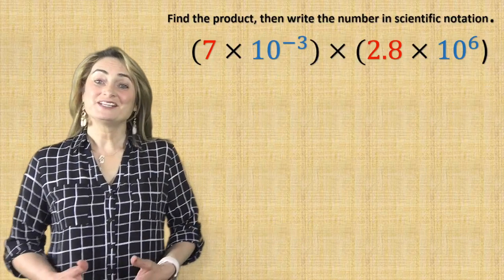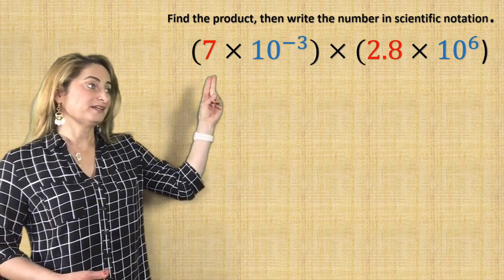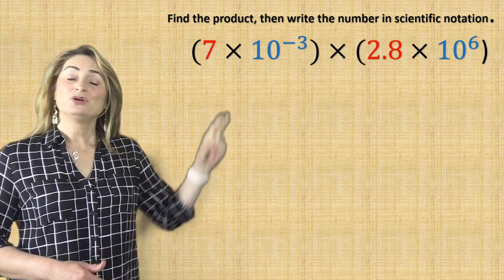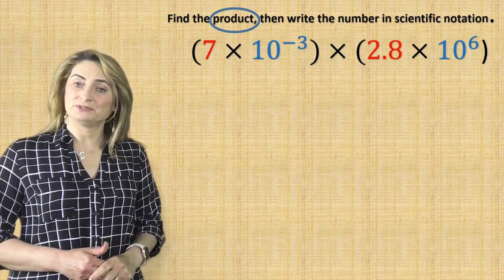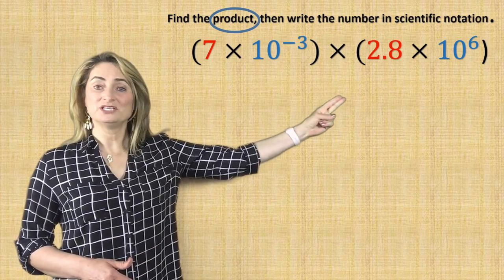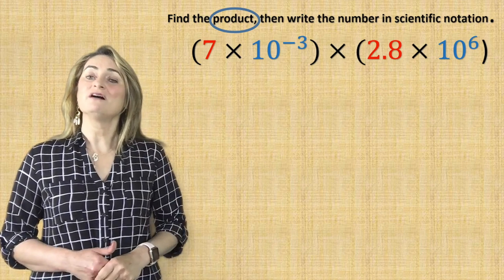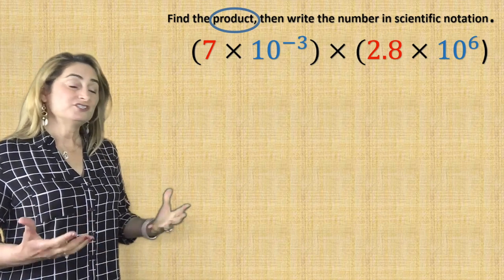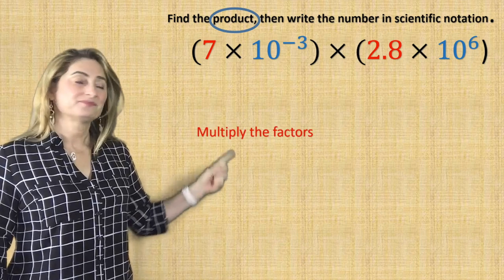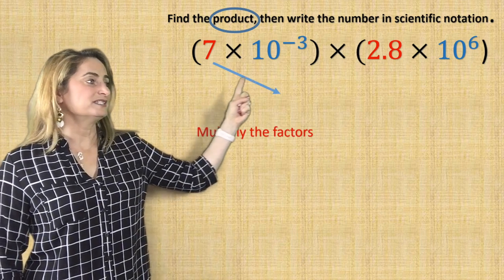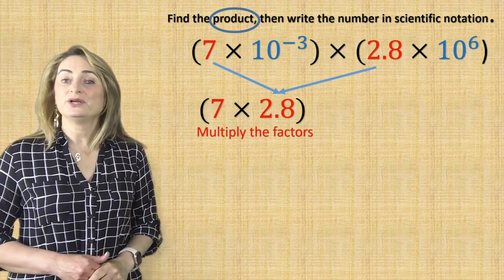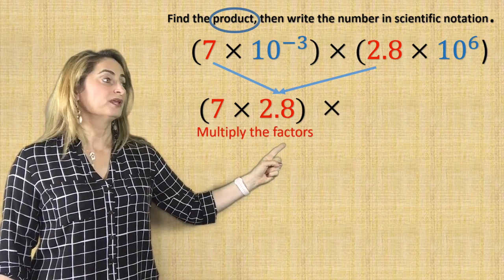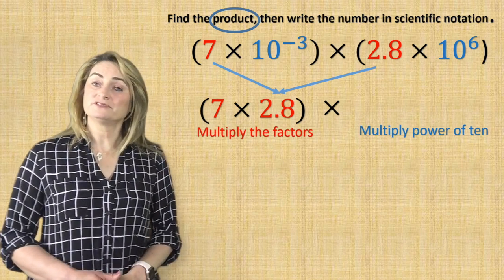Here's the first example for today's lesson. Find the product, then write the answer in scientific notation. The word product means the answer of multiplication. Those two numbers are written in scientific notation and I need to find the answer of multiplying those two numbers. First of all, multiply the factors. The first factor is 7 times 2.8 because that's the second factor. Group them, bring the multiplication down, and now multiply the powers of 10.